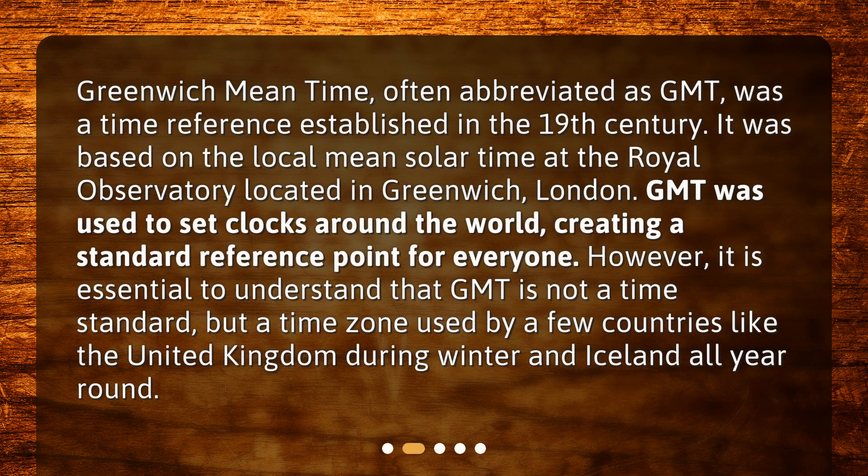Greenwich Mean Time, often abbreviated as GMT, was a time reference established in the 19th century. It was based on the local mean solar time at the Royal Observatory located in Greenwich, London. GMT was used to set clocks around the world, creating a standard reference point for everyone. However, it is essential to understand that GMT is not a time standard, but a time zone used by a few countries like the United Kingdom during winter and Iceland all year round.